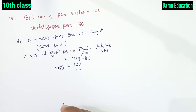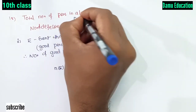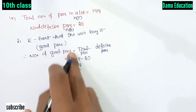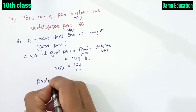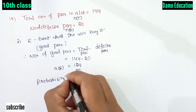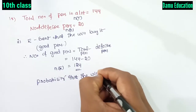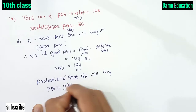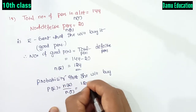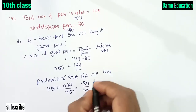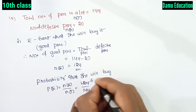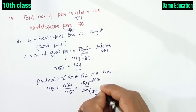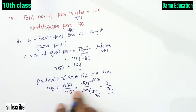This is N of E. Total number of pens we can take as N of T, and number of defective pens as N of D. So, probability that she will buy it — P(E) equals N of E divided by N of T, that is number of good pens divided by total number of pens: 124 by 144, which simplifies to 31 by 36. So the probability that she will buy it is 31 by 36.